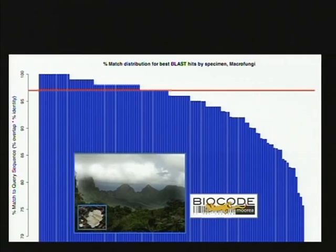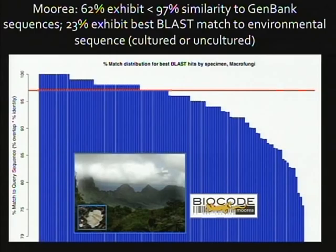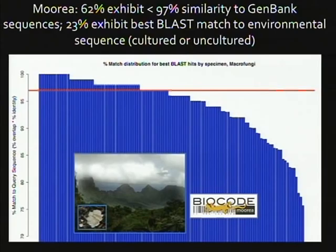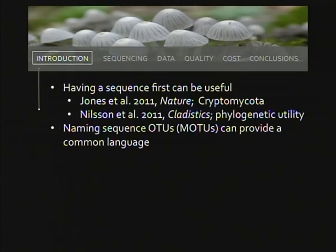Here's an example from work we did in Moorea, a small island close to Tahiti in French Polynesia. When we compared our sequences to GenBank, using the canonical 97% sequence similarity cutoff as a proxy for species, 62% of our sporocarp sequences were less than 97% similar to anything in GenBank. And 23% of our sequences had a best match only to an environmental sequence. Sequencing things found in ATBIs is really expanding the database and enabling identification of environmental sequences.